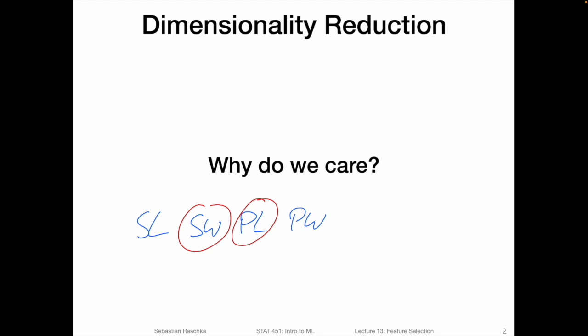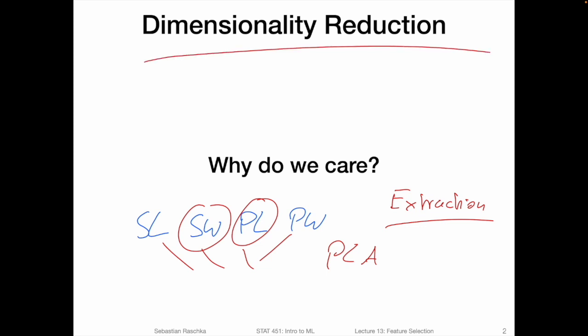In feature extraction, what that usually means is we are extracting new features, which could be done by applying a linear transformation to existing features. There's a technique called principal component analysis, abbreviated PCA, which combines multiple features by linear transformation and allows us to construct a new, smaller feature subspace. But this is the topic of the next lecture. Here, we are really interested in selecting original features in the dataset. Dimensionality reduction in general is the process of creating smaller dimensional feature spaces.